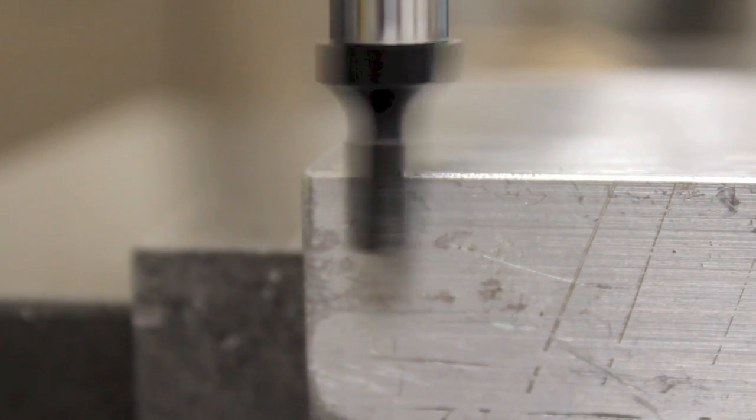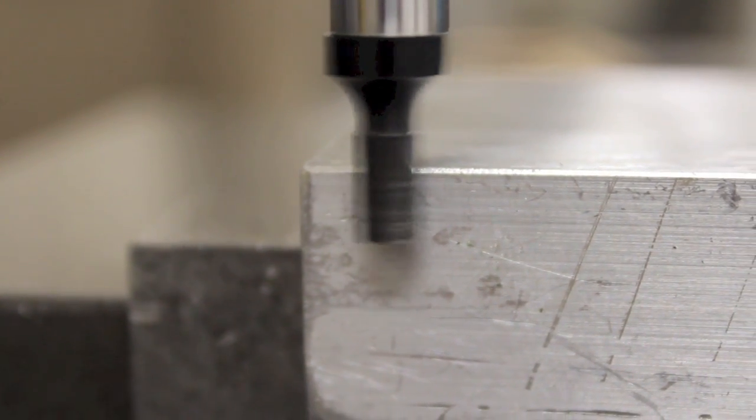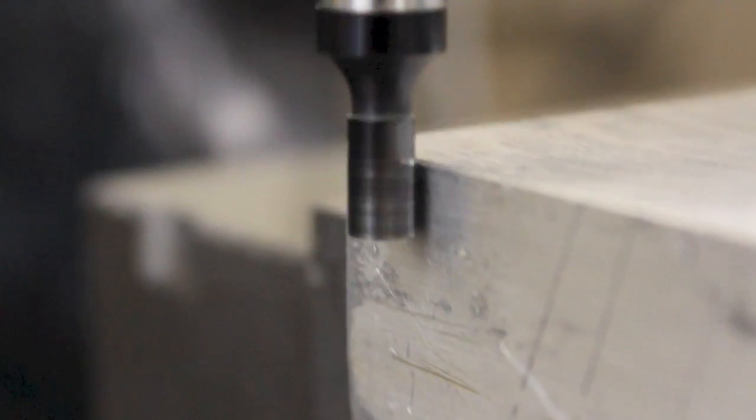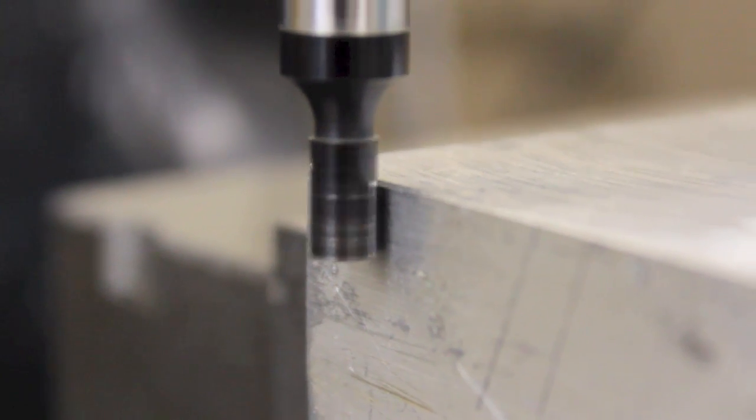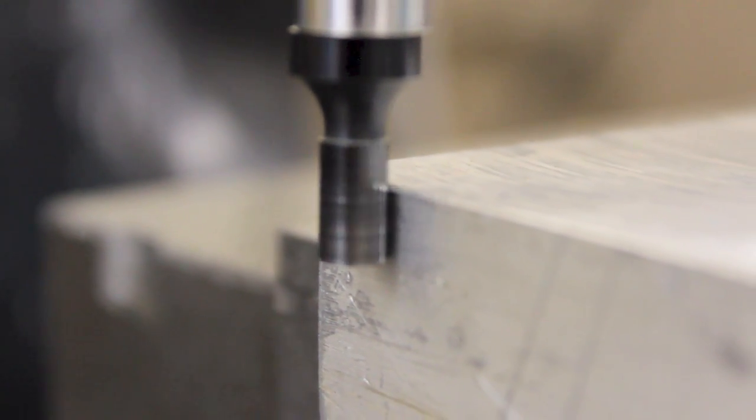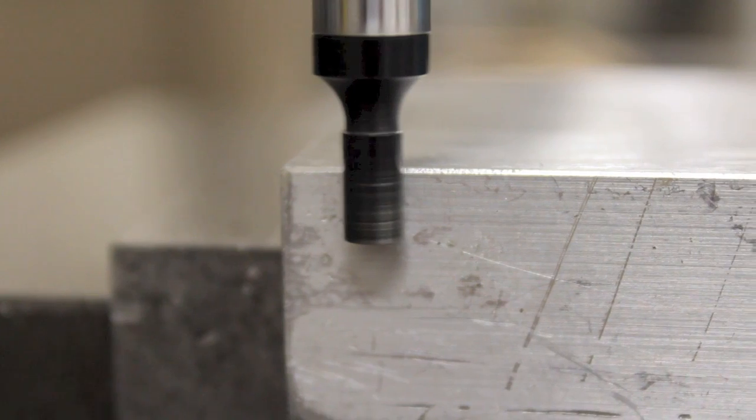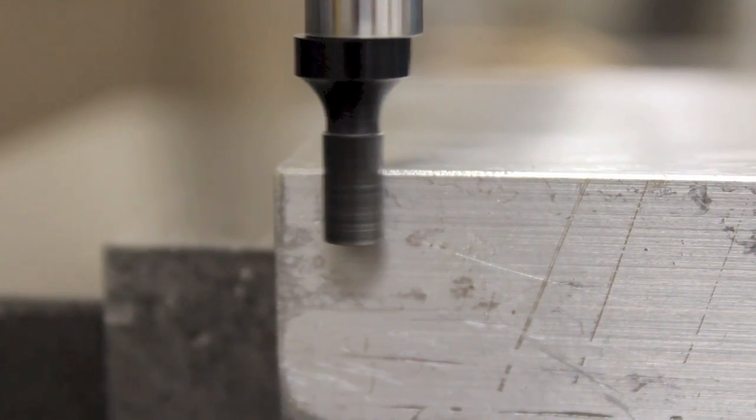Watch as the edge finder begins to rotate less and less out of round. Now the edge finder is rotating perfectly in line with the shank. The operator moves the tool just a hair more. The edge finder has now pushed off.